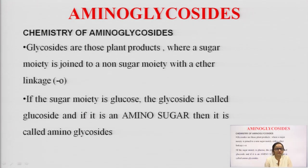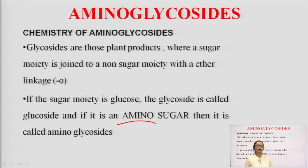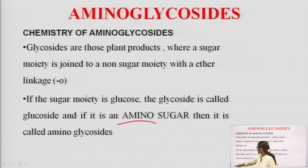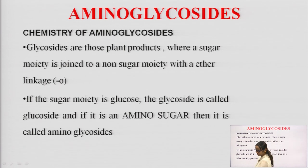The chemistry of aminoglycosides: glycosides are those compounds in which a sugar moiety is joined to a non-sugar moiety with an ether (glycosidic) linkage. If the sugar is glucose, the glycoside is called a glucoside. If an amino sugar is present — meaning a sugar with an attached amino group — it comes in the category of aminoglycosides.